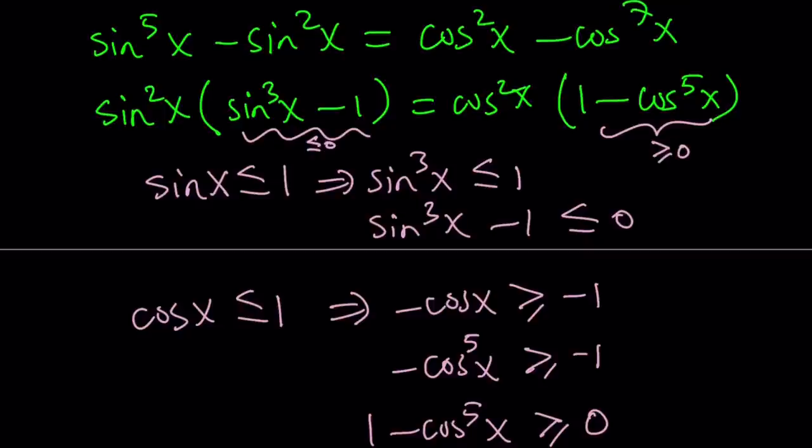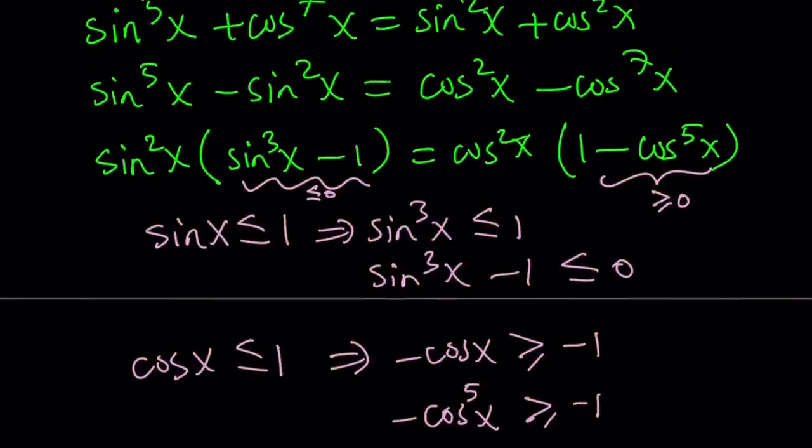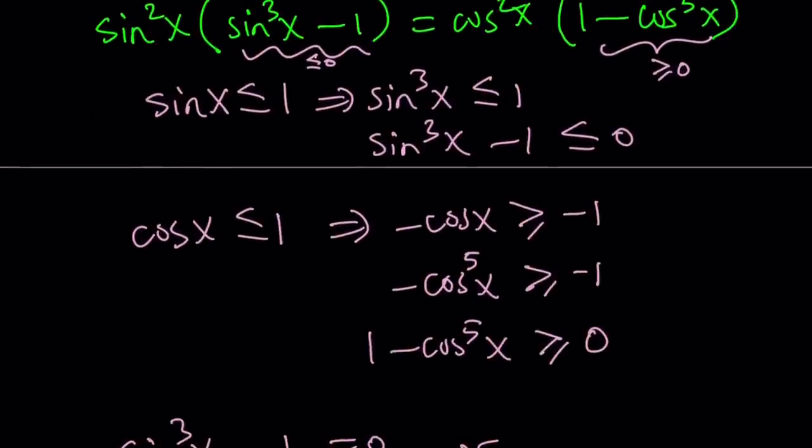It means this is always greater or equal to zero. And sine squared and cosine squared obviously cannot be negative, so they're not really going to impact anything. But notice that we have a weird situation. If one side is negative, the other side is positive, then it's kind of problematic. So they both have to be zero. Here's the conclusion. Sine cubed x minus one equals zero or one minus cosine x to the fifth power is zero.